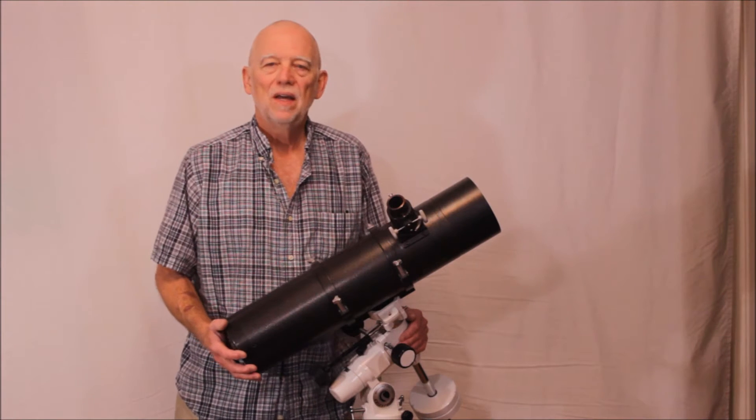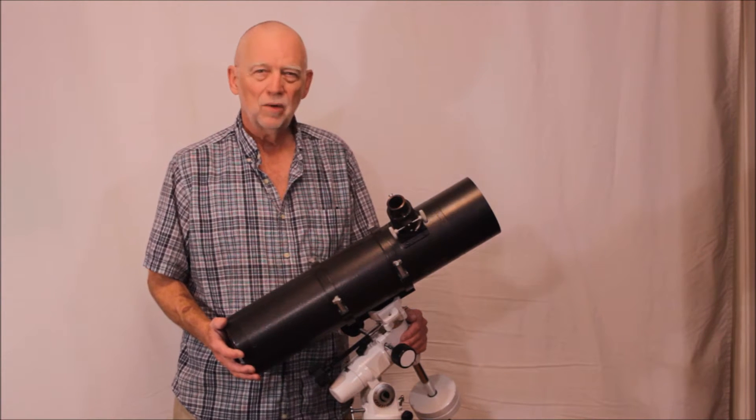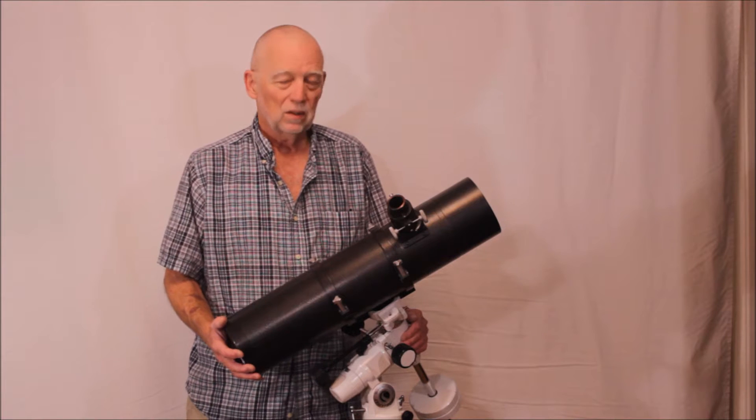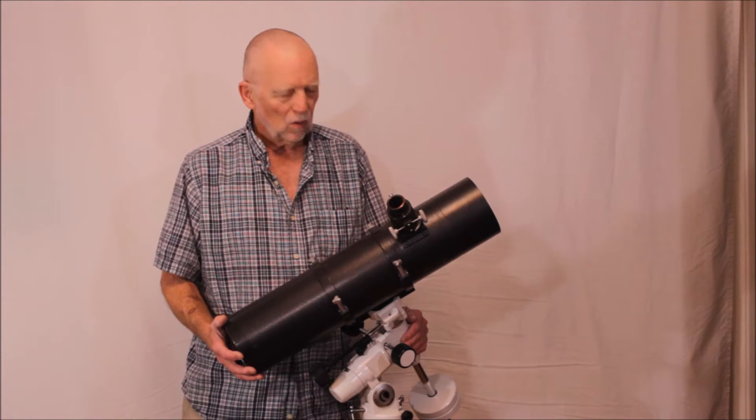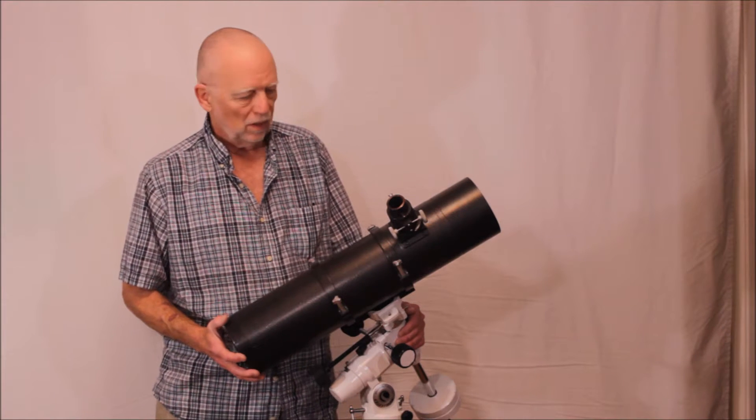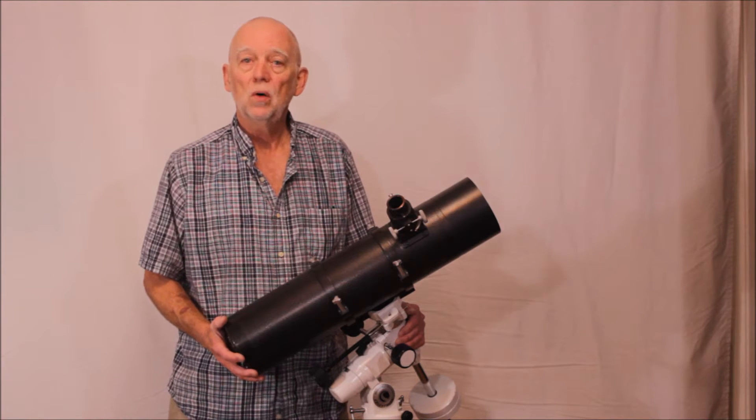Hi, my name is Dave and today we're going to look at this charming Russian telescope. This is a Lomo Estelle 102MN, which is a Maksutov-Newtonian.